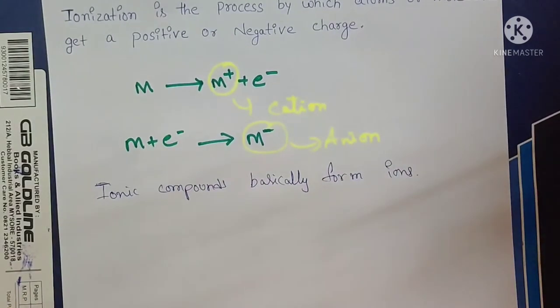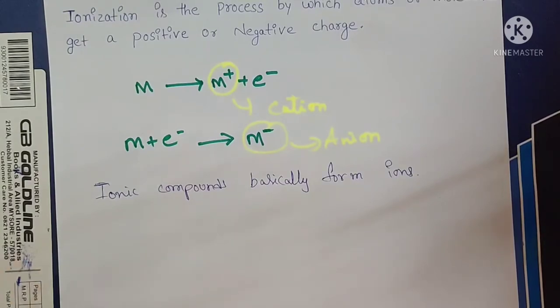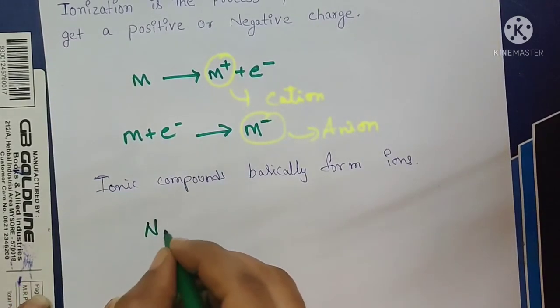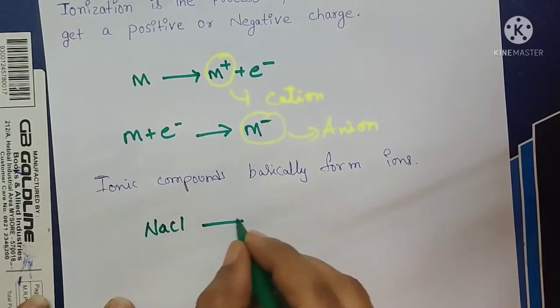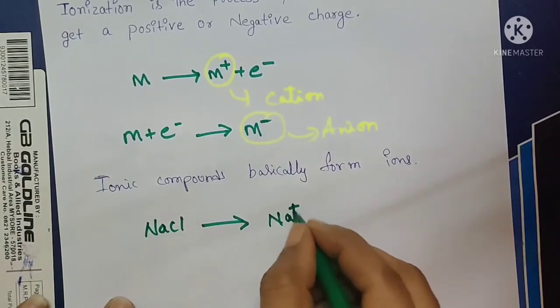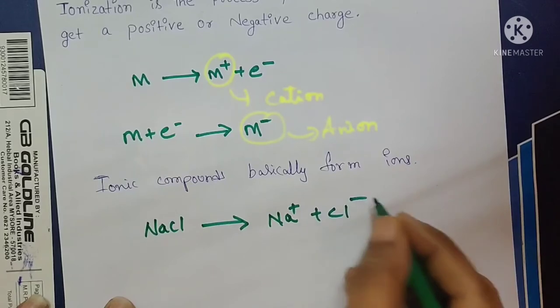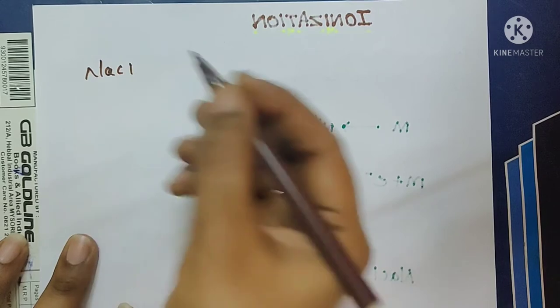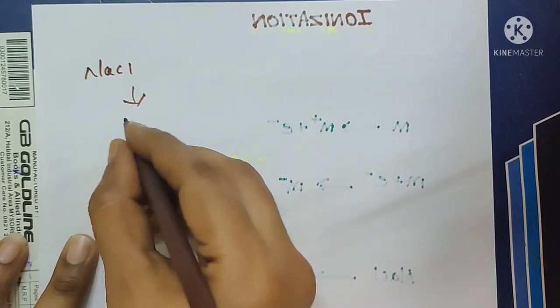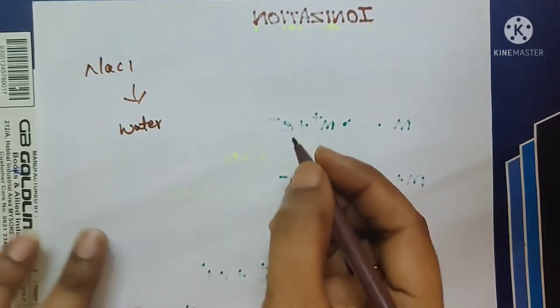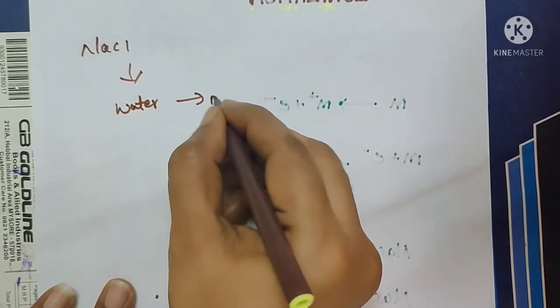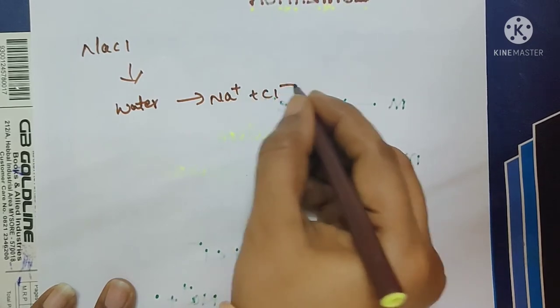We will see one example. Tell me the common example for an ionic compound. Sodium chloride. When it dissolves in the water, it dissociates into Na plus plus Cl minus.